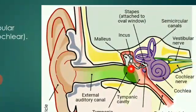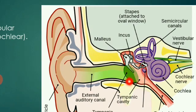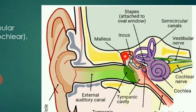The tympanic membrane, or eardrum, is a thin membrane — the outside is similar to skin, but the inside is a mucus membrane. At the center of the eardrum, the region is called the umbo, to which the malleus is attached. The eardrum is very important for carrying sound vibrations to the middle ear.